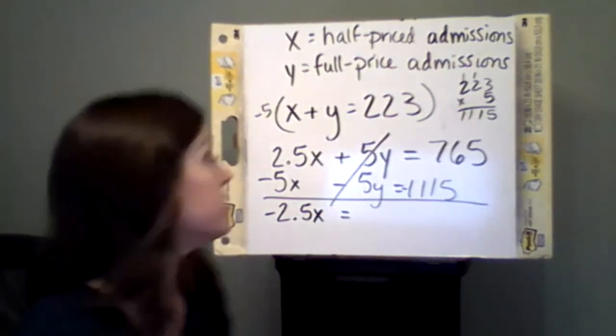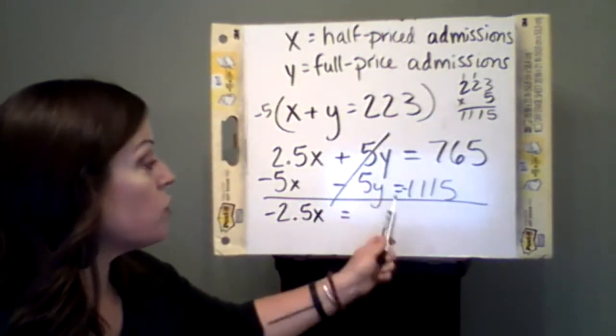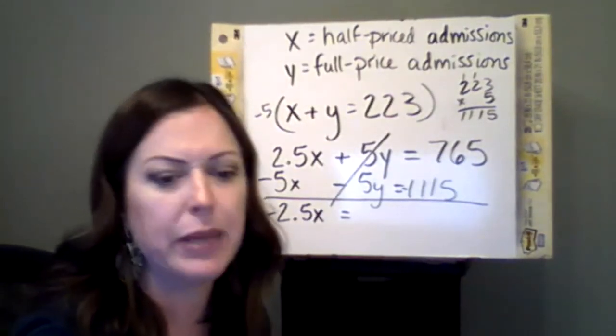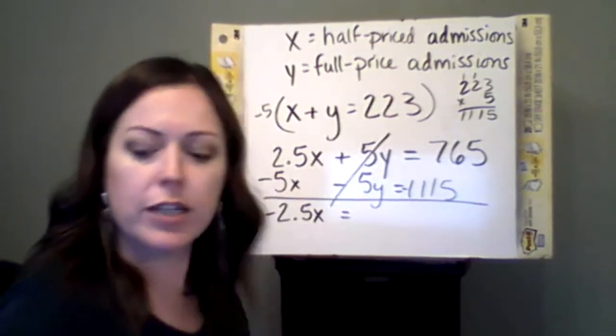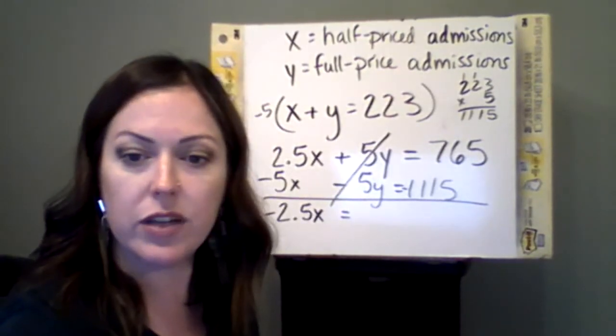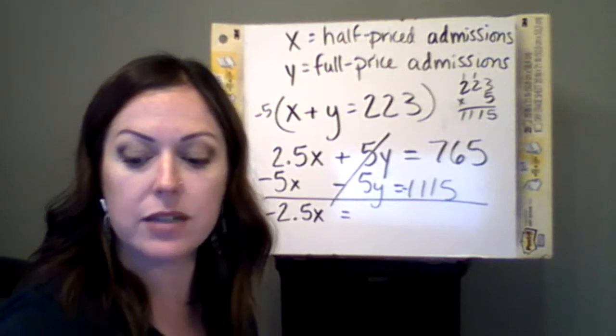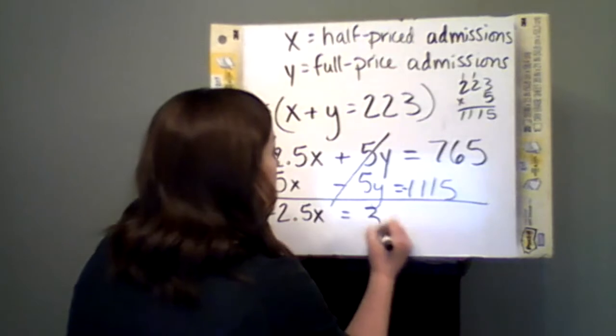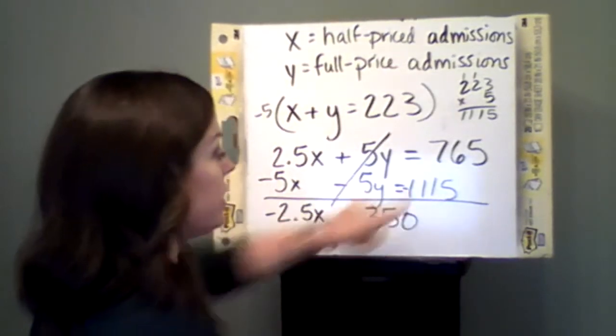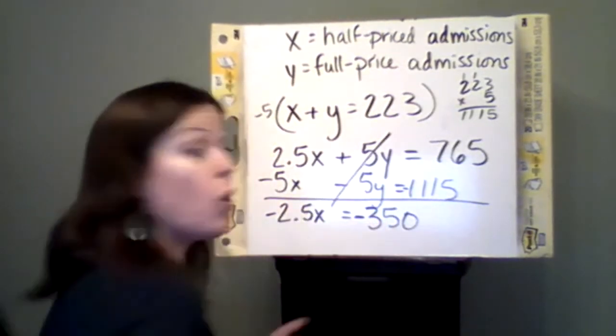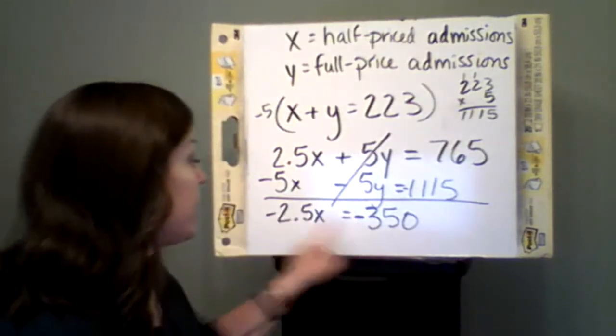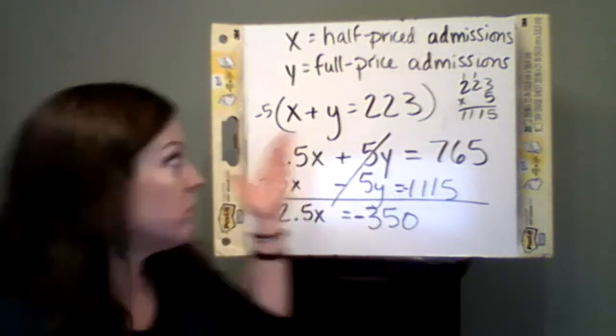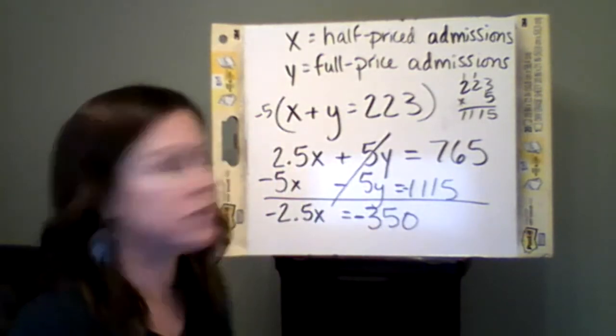Equaling, now I have to find the difference between 1,115 and 765. Let me get my calculator real quick. 1,115 minus 765 gives me 350. And that was a negative, so this needs to be a negative, which I need so that I have a negative and negative canceling out, because I'm not going to have a negative number of people going to the zoo. It doesn't make any sense. So I know I'm on track.